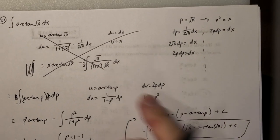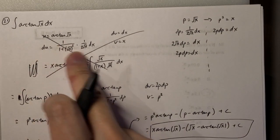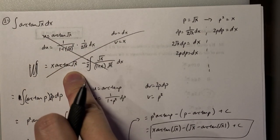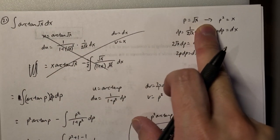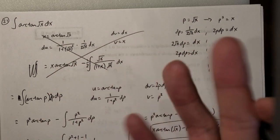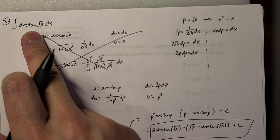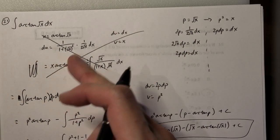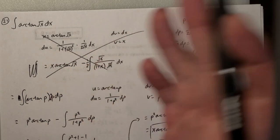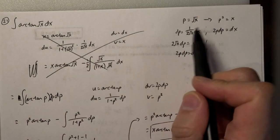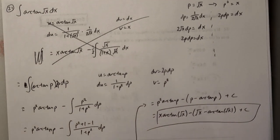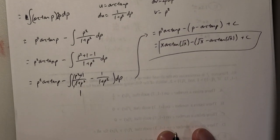This just goes to show that even when I pre-solved this, I tried the direct integration by parts first — it didn't quite work, so I tried a different method. For harder integrals like this one, you might try one method, find it doesn't work, backtrack, and try a different method. Here, making the substitution p = √x clearly made things a lot easier.